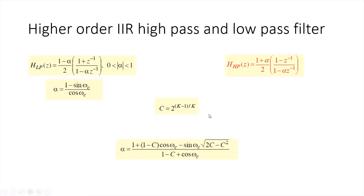In this method we specify the number of cascade sections. For a high pass or low pass filter design, we need to know the number of cascade sections. The value of alpha is calculated using the formula where C is equal to 2 raised to the power (k - 1) over k. That's how we calculate the value of alpha.